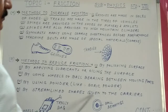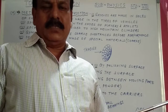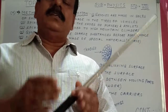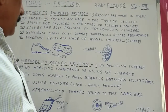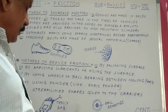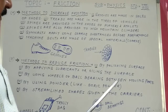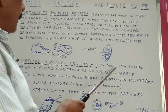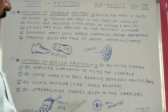Number five: by giving streamlined shapes to carriers. Carriers like aeroplanes, buses, and boats are given special streamlined shapes to reduce air friction and water friction so they can move faster. These are the five methods to reduce friction: by polishing, lubricating, using wheels or ball bearings, using powder, or using a streamlined body.